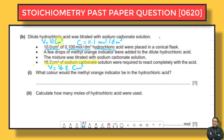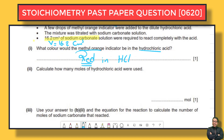In question B part i: what color would the methyl orange indicator be in the hydrochloric acid? From the chapter on acids, bases and salts, if you've memorized the indicators, you'll know that methyl orange in an acid has a red color. So the color of methyl orange in HCl will be red.